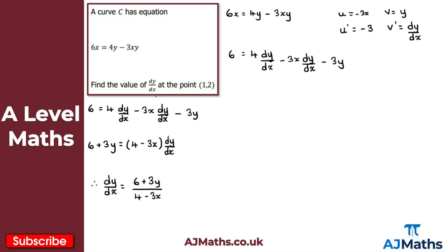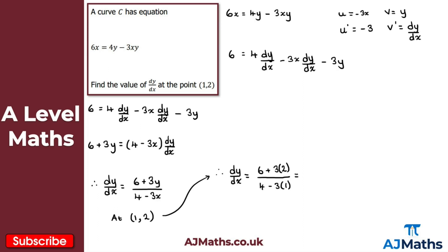We want the value of dy by dx at the point (1, 2), so we substitute x equals 1, y equals 2. This gives dy by dx equals (6 plus 3 times 2) divided by (4 minus 3 times 1), which is 12 over 1, simply giving 12. That's the solution to question 2.